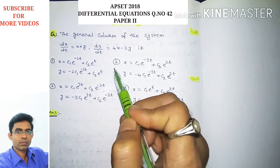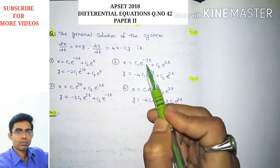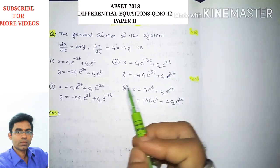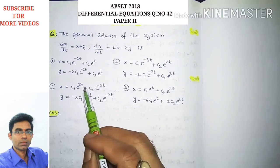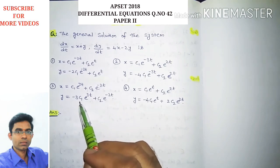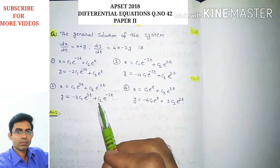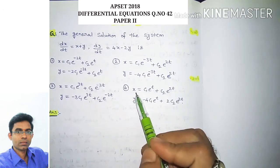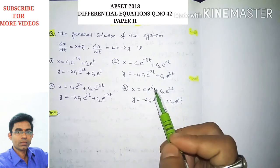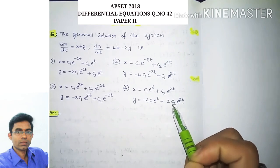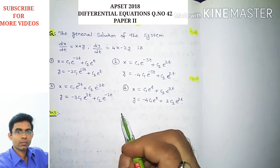Option 2: x = c1·e^(−3t) + c2·e^(2t), y = −4c1·e^(−3t) + c2·e^(2t). Option 3: x = c1·e^(3t) + c2·e^(−2t), y = −3c1·e^(3t) + c2·e^(−2t). Option 4: x = c1·e^t + c2·e^(2t), y = −4c1·e^t + 2c2·e^(2t). We have to choose one correct option.